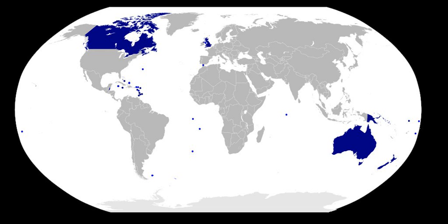A Commonwealth realm is a sovereign state in which Queen Elizabeth II is the reigning constitutional monarch and head of state. Each realm is independent from the other realms. As of 2018, there are 16 Commonwealth realms.